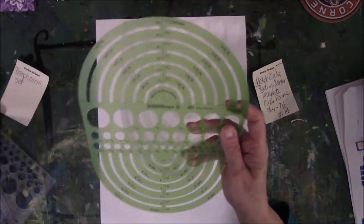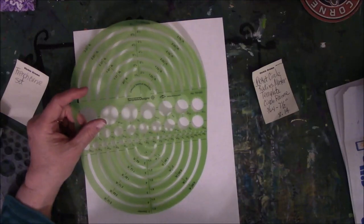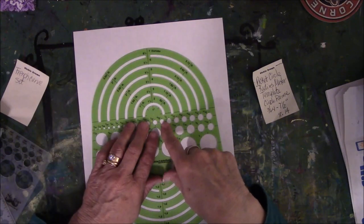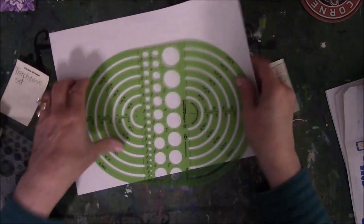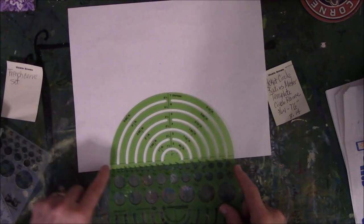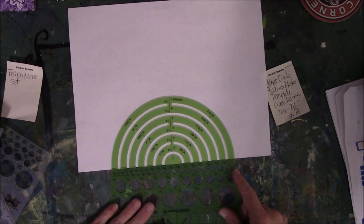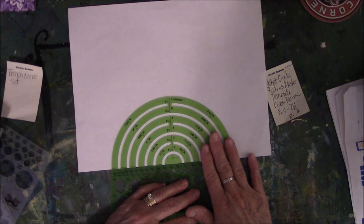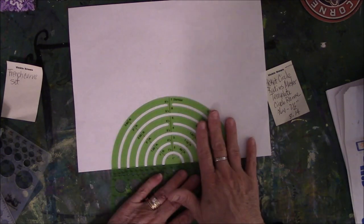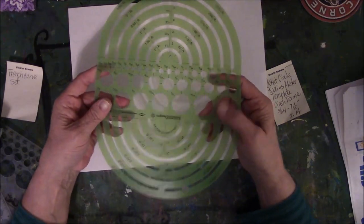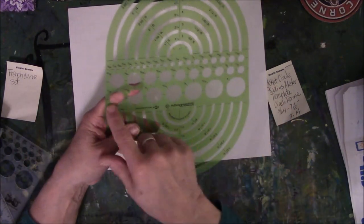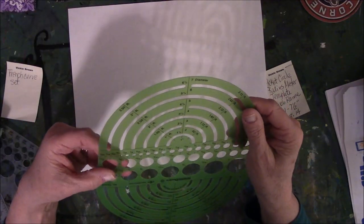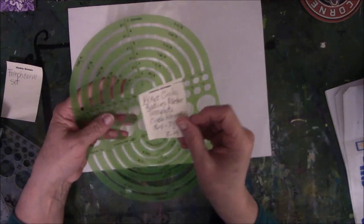I watched somebody do a mandala on YouTube last night and she actually used this, put it on the edge of her paper, lined up these lines here with the edge of the paper, and just drew inside and made the most wonderful mandala. It was a half one. So these are very cool tools to use. You have this and then it has the circles inside here going from, let's see, what's the biggest one? One inch down to three sixty-fourths.